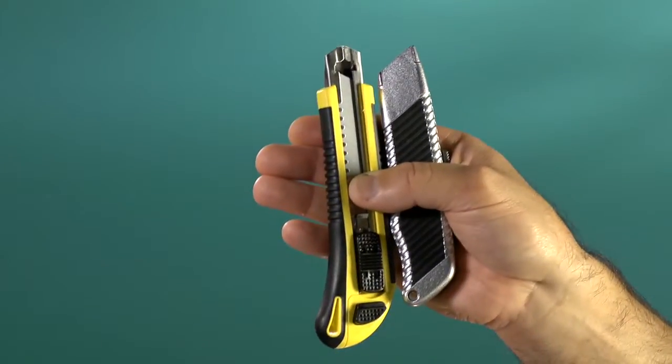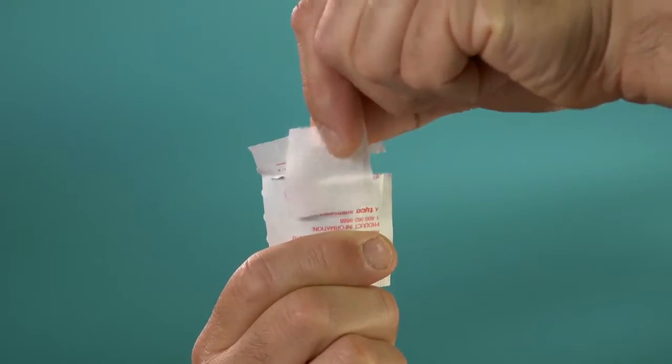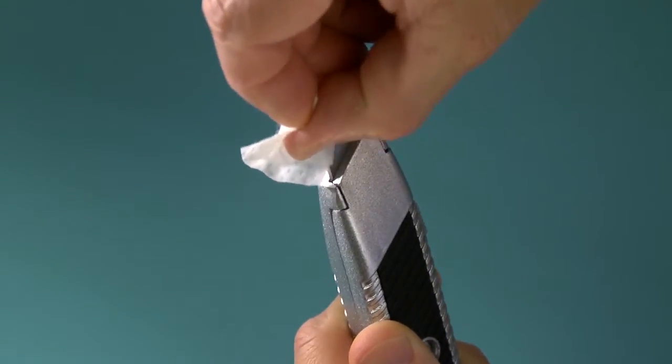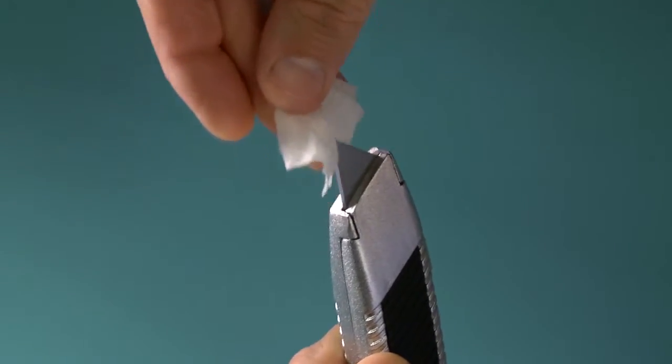You will also need a sharp utility knife. You should also have some alcohol wipes on hand to clean the blade of the knife before and after testing each area. This is done to prevent cross-contamination.